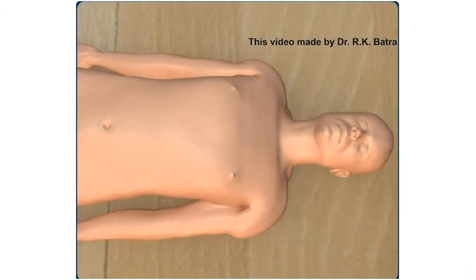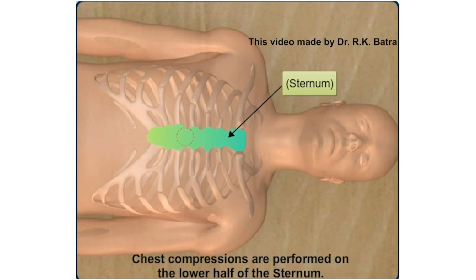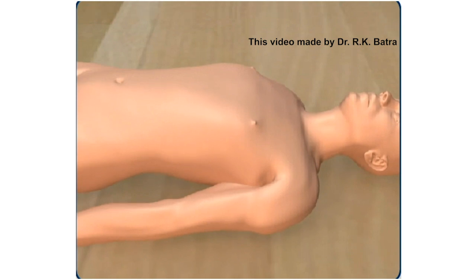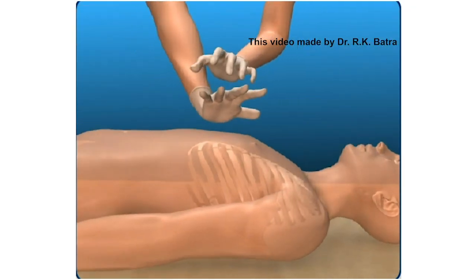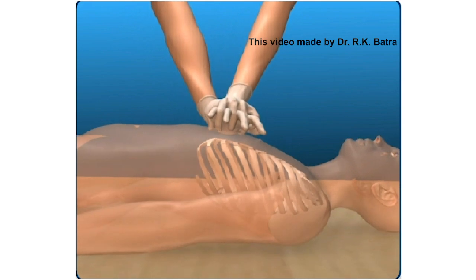The following video re-emphasizes the important points. The hand must be placed in the lower part of the sternum as demonstrated. The elbows are fixed with movement of the rescuer at the hip joint only.